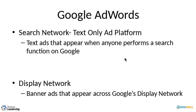On Google AdWords you can run two types of campaigns. A Search Network campaign shows text-only ads to anyone who performs a search on Google. A Display Network campaign shows standard banner ads across Google's display network — a mix of websites, YouTube, and mobile apps. You can also run a combination of both, but for startups focused on lead generation, stick to Search Network only.